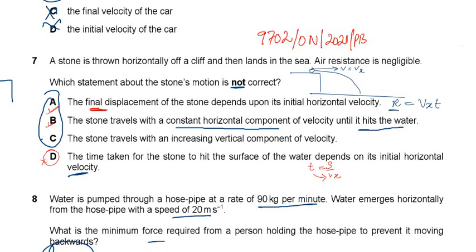This is 9702 October November 2021 paper 1 variant 3, question number 7. A stone is thrown horizontally off a cliff and then lands in the sea. Air resistance is negligible. Which statement about the stone's motion is not correct?